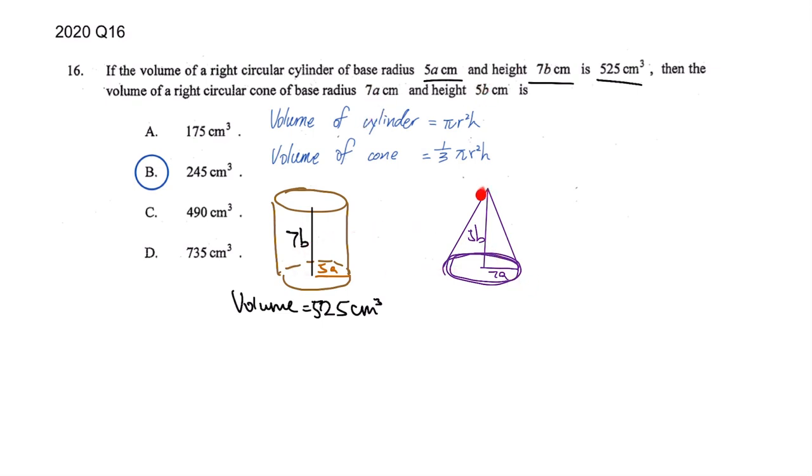Or maybe because there is a pointy face here, so it's just one over three. So if you try 525 divided by three is 175, but that's not the answer. That's why I circled the answer at first.